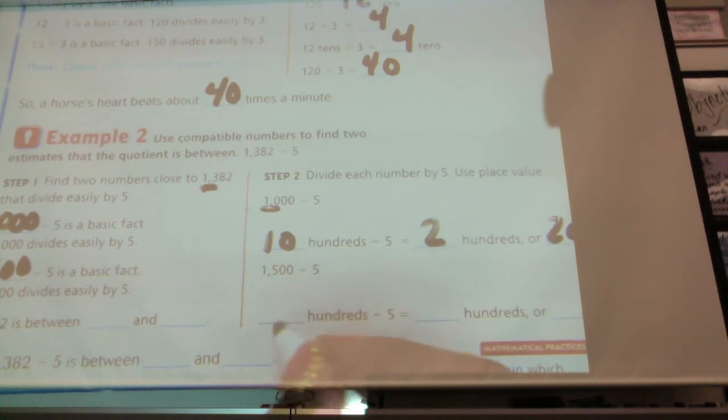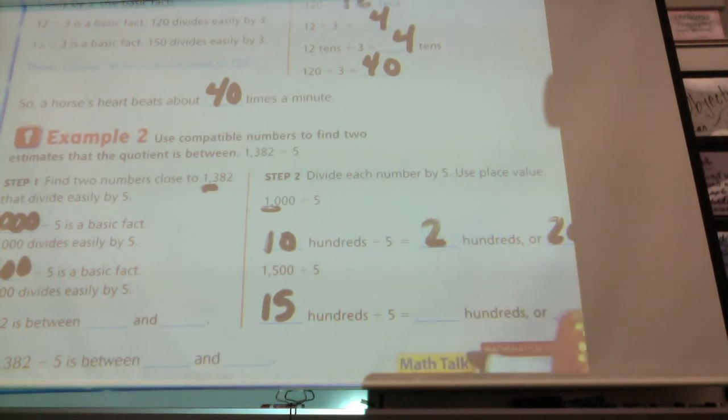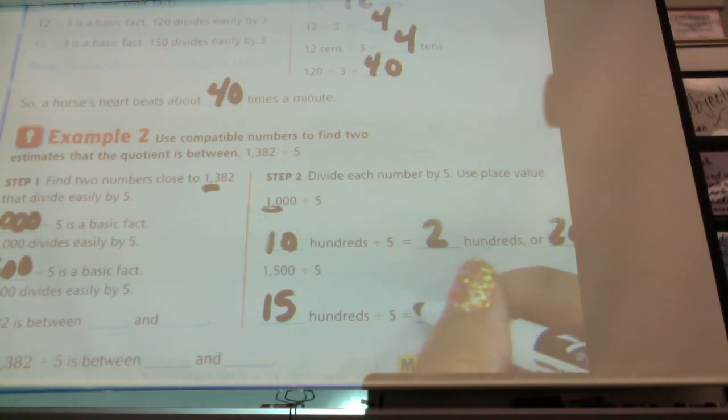Okay. So now doing this one, we have 1,500 is how many hundreds? I just told you. 1,500 is how many hundreds? 15. 1,500 divided by 5 is going to be how many hundreds? I want you guys to think. I want you to think. That means stop talking. Thank you. 15 divided by 3. Raise your hand when you know. What is 15 divided by 5? 3. I told you the answer.